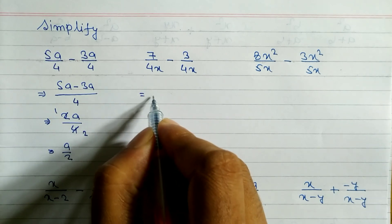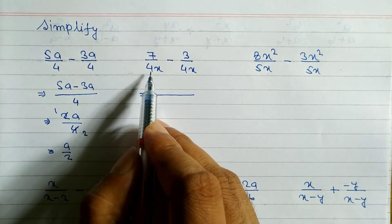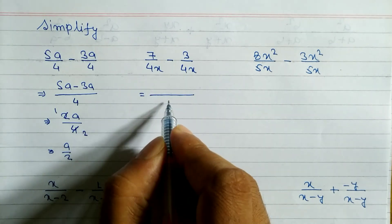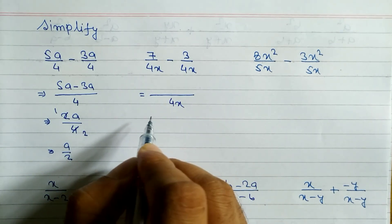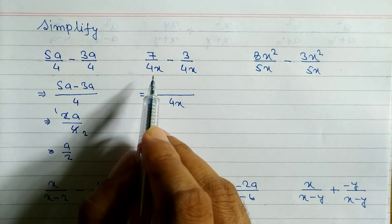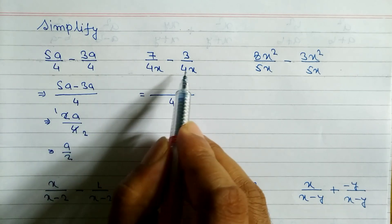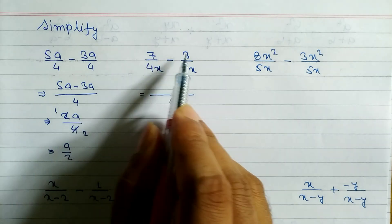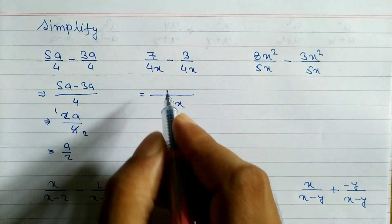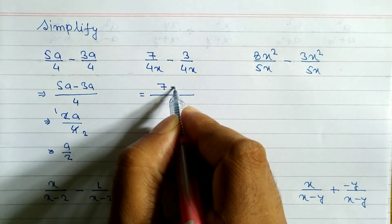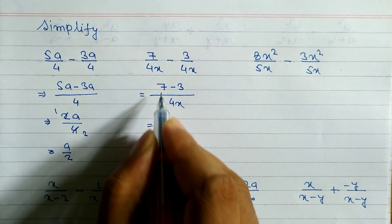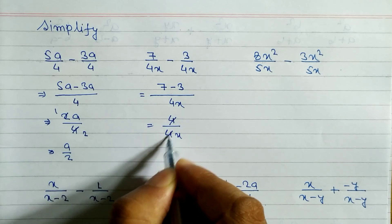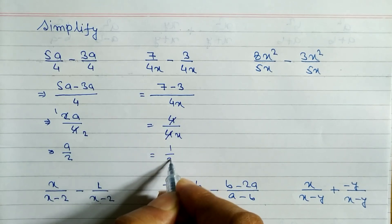Similarly, look at the next question. We have 7 by 4x minus 3 by 4x. In the denominator you can see both are same, so the LCM is 4x. When these two denominators are same, no need to multiply or divide. Directly you can write down the numerator. So we write 7 minus 3, which equals 4 divided by 4x. 4 and 4 cancel, and the answer is 1 by x.